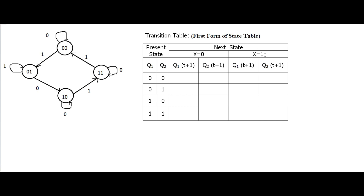When x equals 0, what is the next state, and when x equals 1, what is the next state? For that, we check only the tail end of each arrow — we should not look at the arrowhead. For present state 00, when x equals 0, we look at the tail end of the transition.